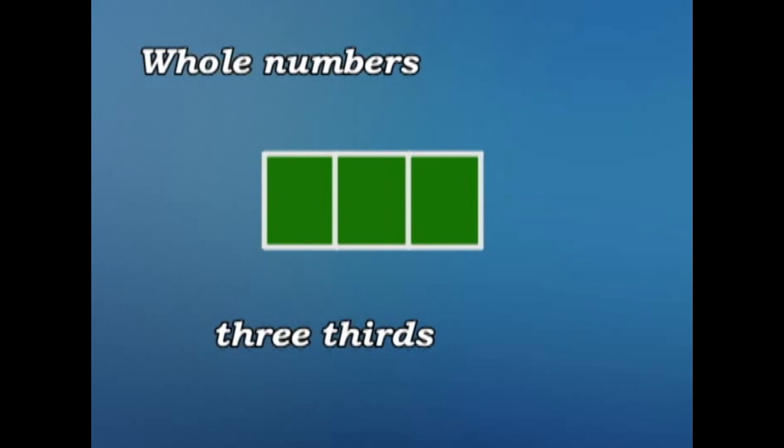But if we don't want to spell the words, we can write three over three. But we don't usually, do we? Because three parts out of three equals one whole. So we could just write one.